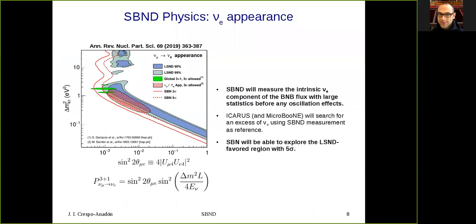In terms of oscillation physics, for studying neutrino appearance, the role of SBND will be measuring the intrinsic electron neutrino component of the booster neutrino beam flux with larger statistics before any oscillation happens. Then ICARUS and MicroBooNE will search for an excess of electron neutrinos using SBND measurement as reference. As you can see in the plot, the SBN program will be able to explore the LSND favored region shown as blue shade with five sigma.